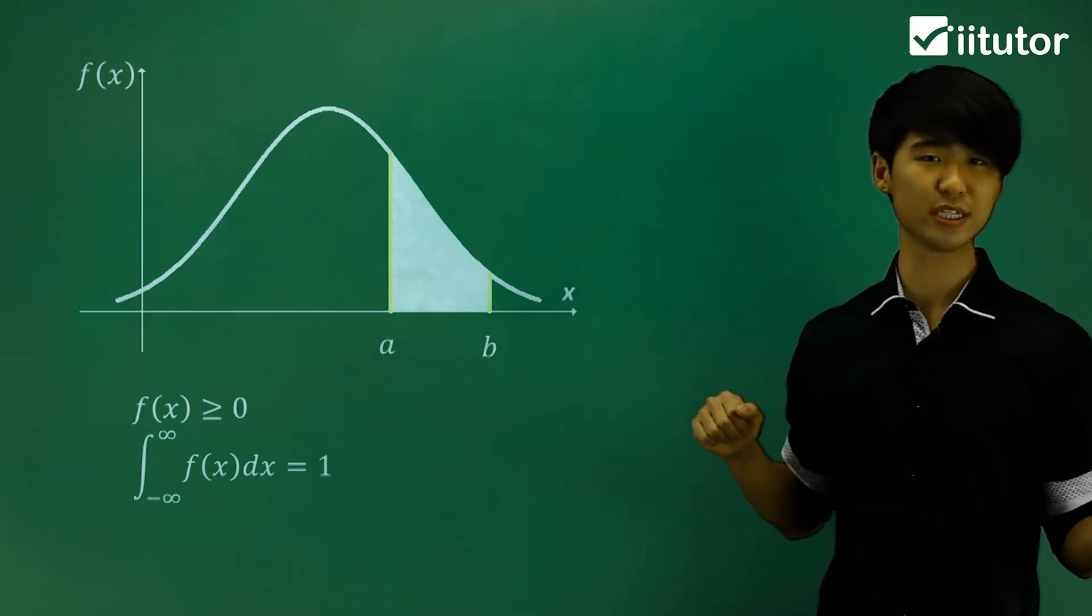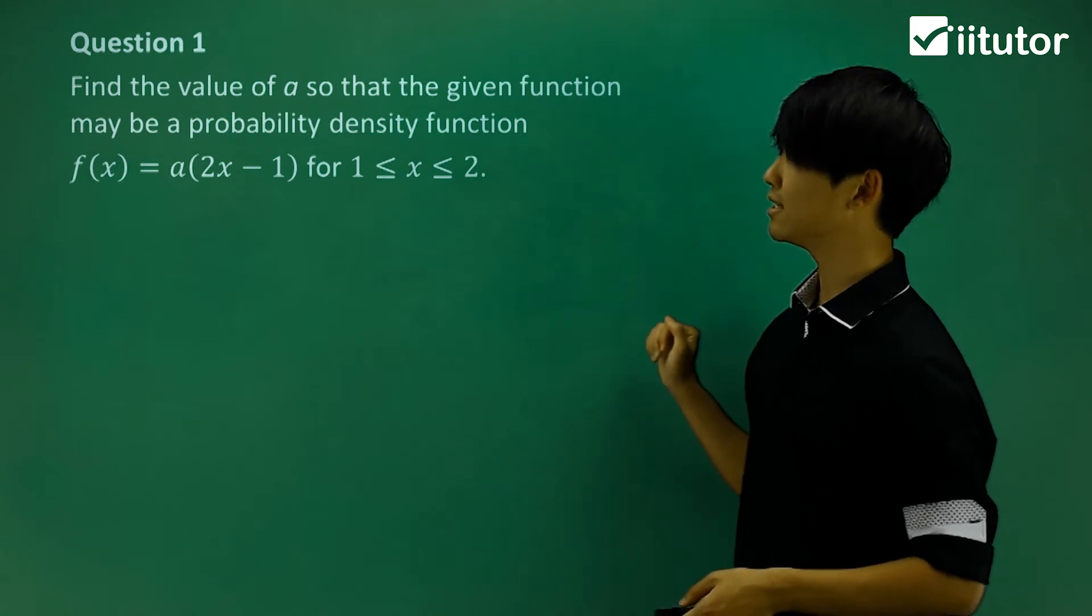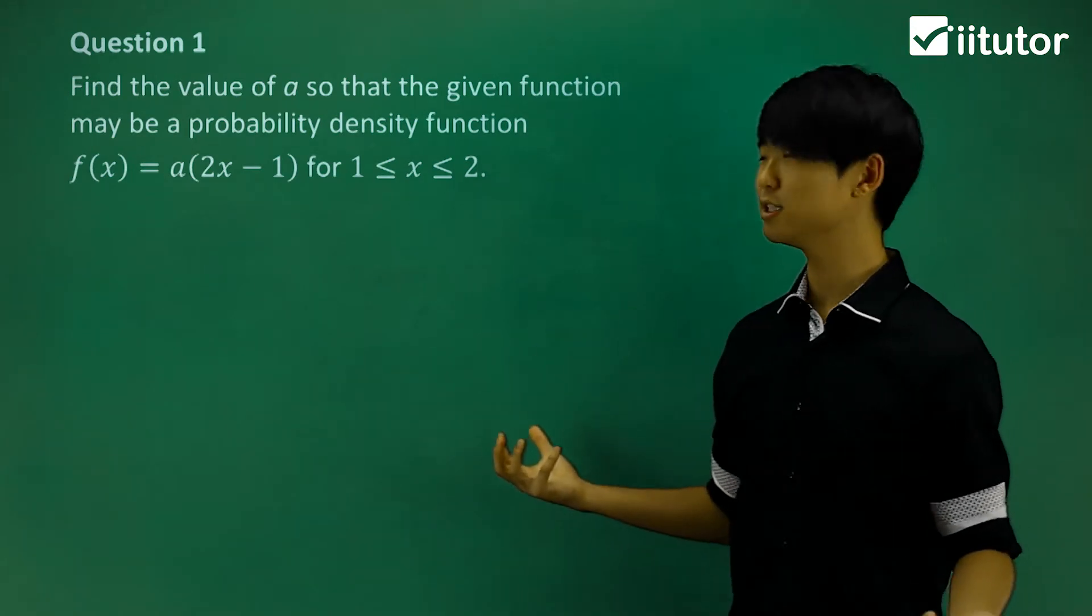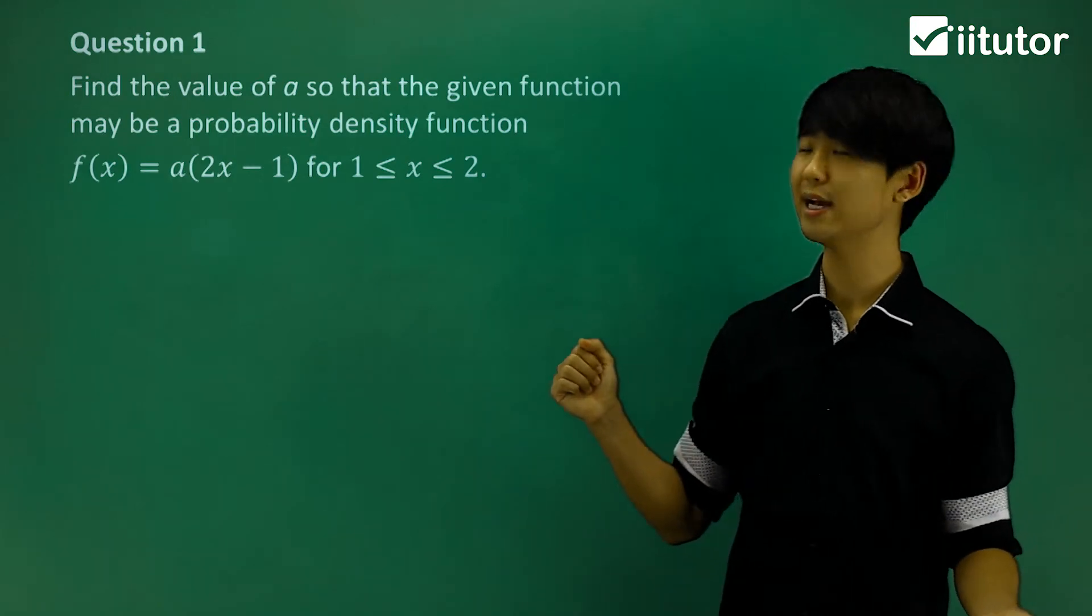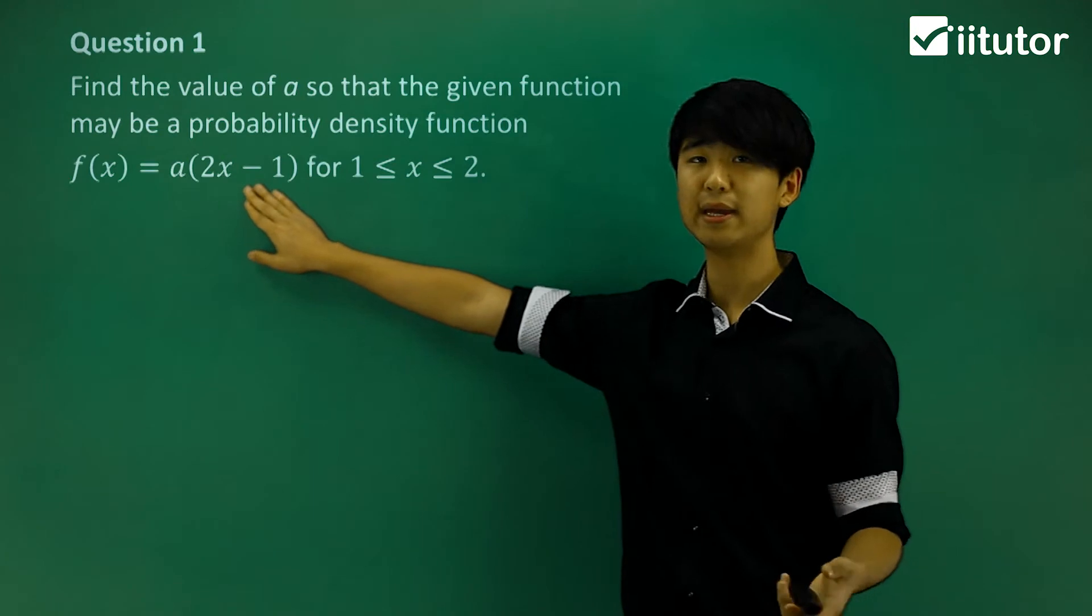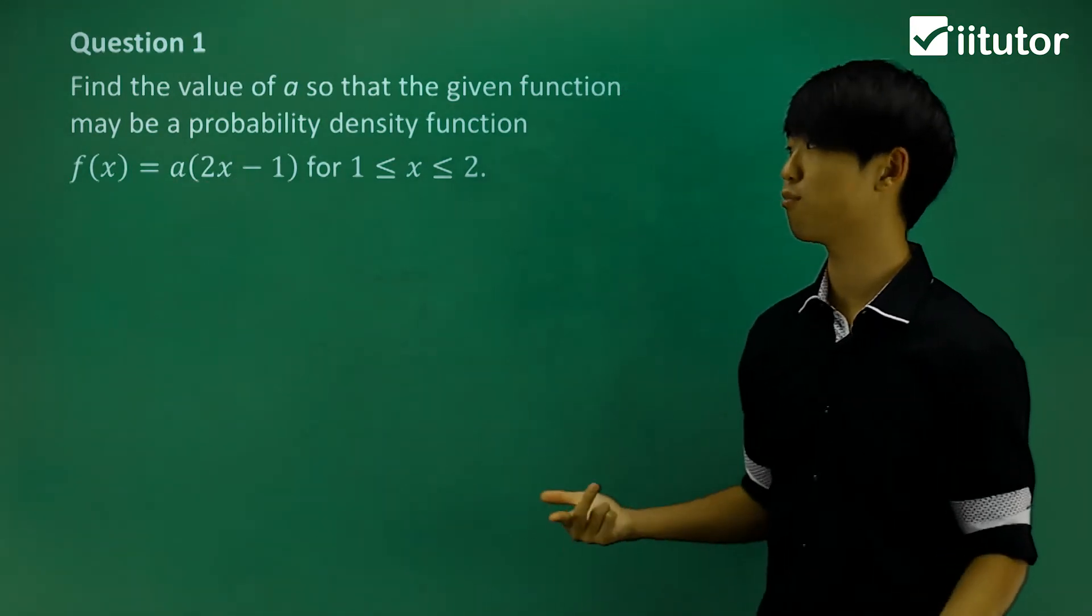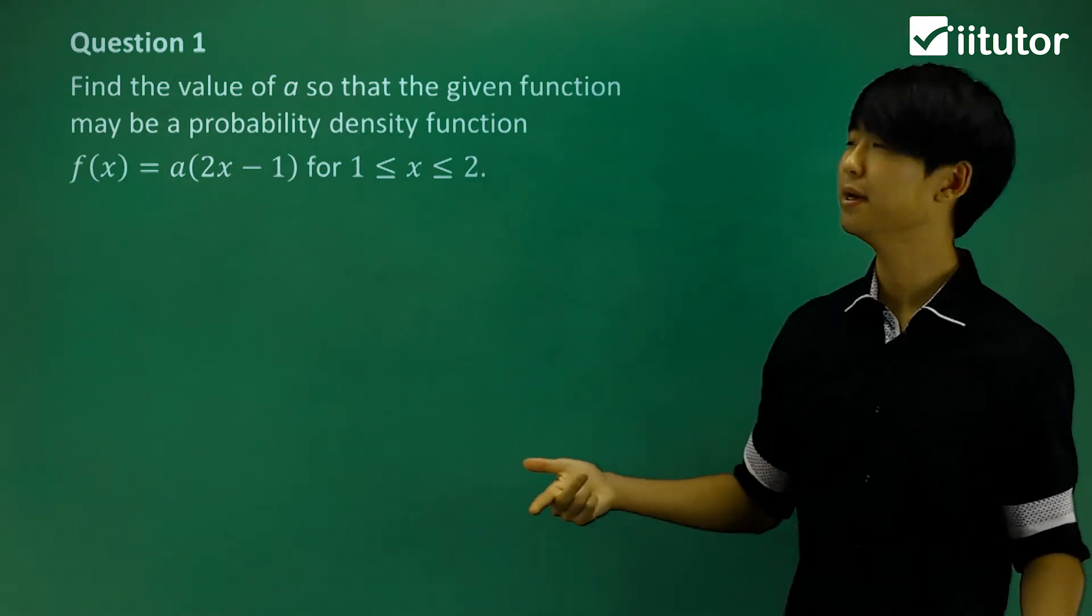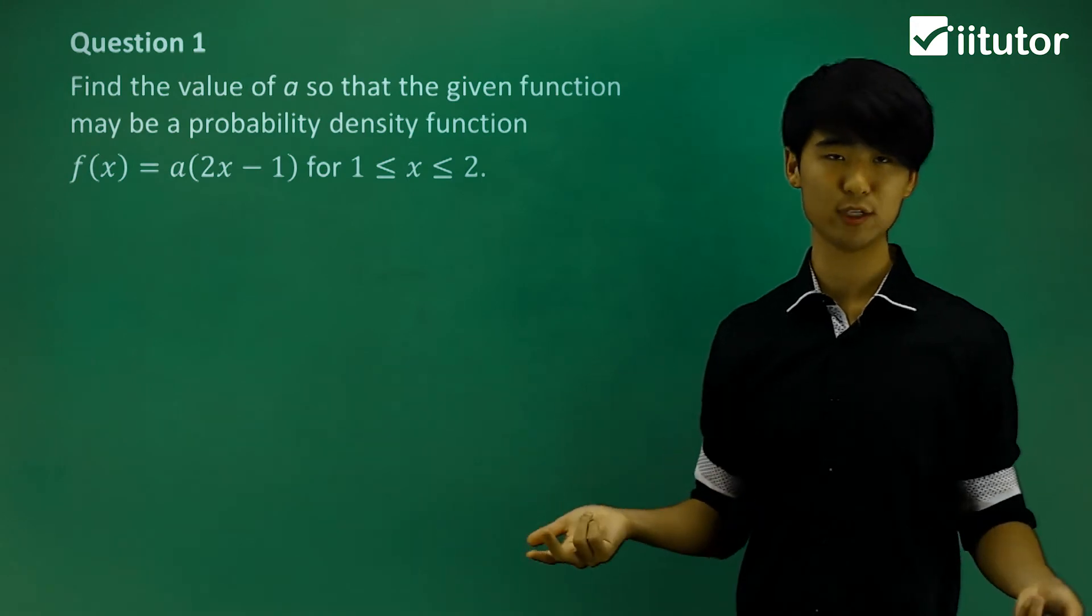So these are the two conditions. Now we take a look at some of the questions. In question 1, it says find the value of a so that the given function may be a probability density function. So we have fx equals to this function, a outside of 2x minus 1. And we're going to try and find the value of a for this to be a probability density function.